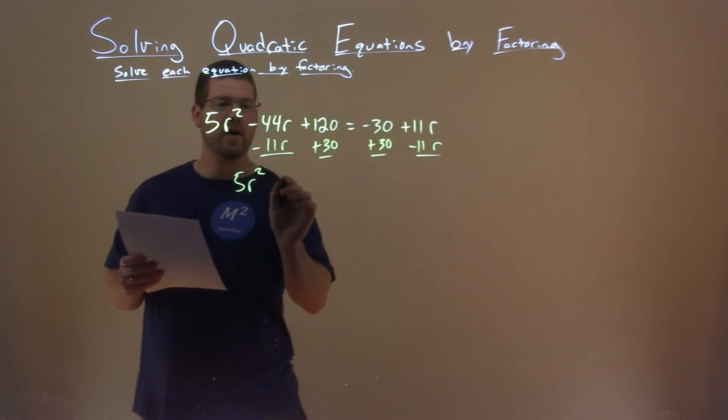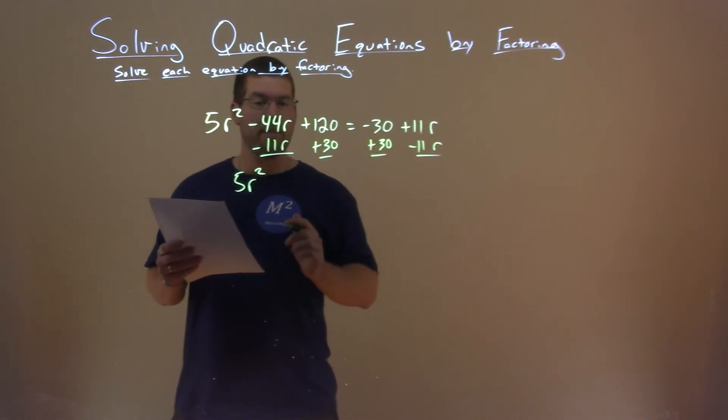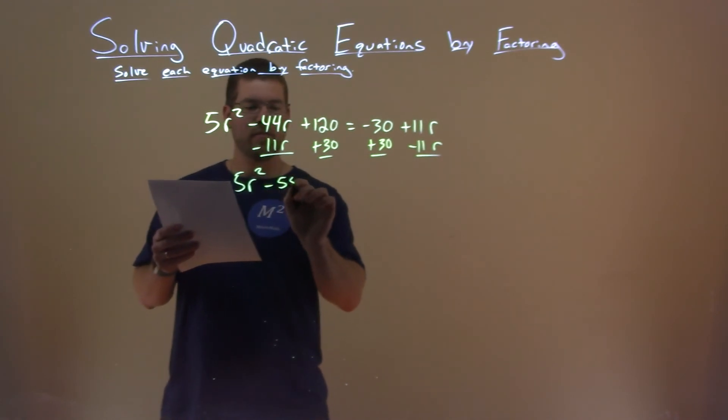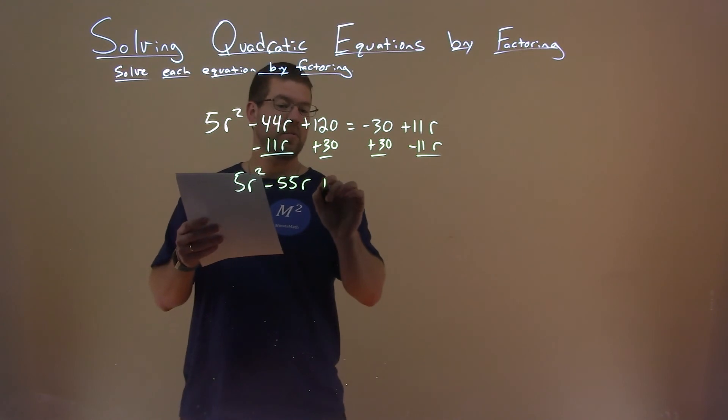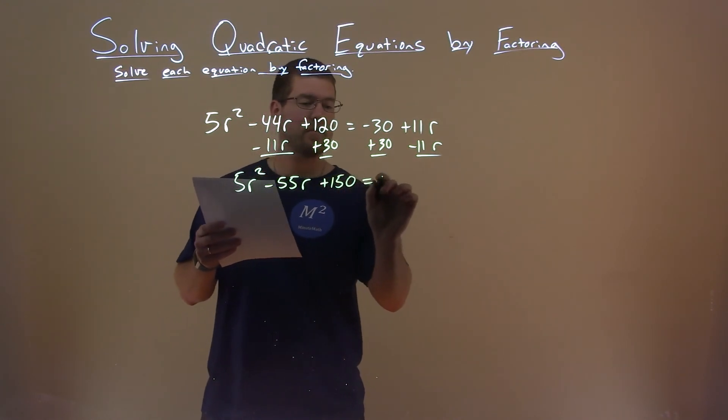5r squared, and then minus 44r minus 11r is minus 55r. 120 plus 30 is 150, and that's equal to 0.